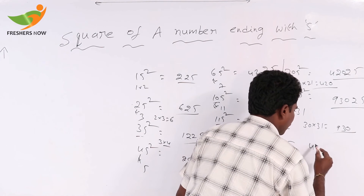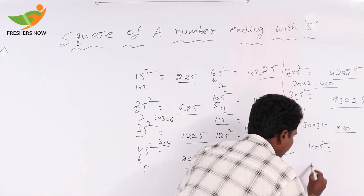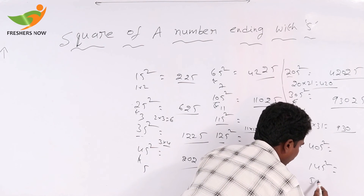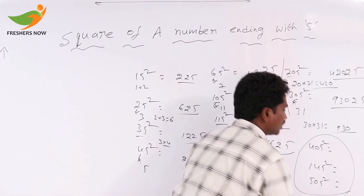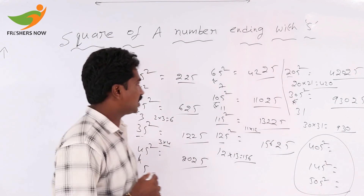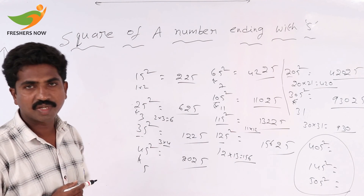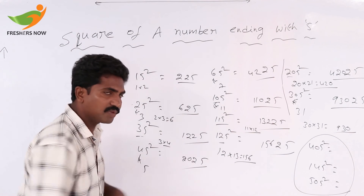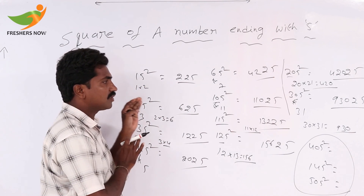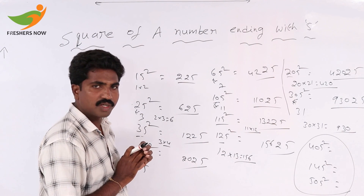Now solve for 405 square, 145 square, and also 505 square. To summarize: for a square of a number ending with 5, write 25 at the end, then write the product of the remaining number and the next consecutive number before it.